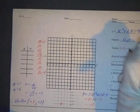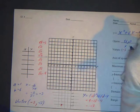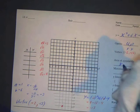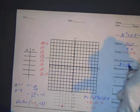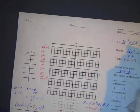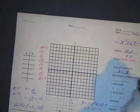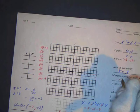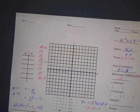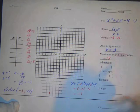The vertex is at (negative 3, negative 13) — that's the x and y. The axis of symmetry is x equals negative 3. Since the parabola opens upward, we have a minimum rather than a maximum, and the minimum value is the y-value of the vertex: negative 13.